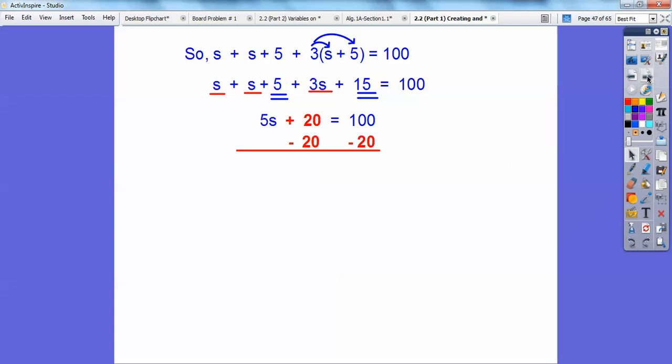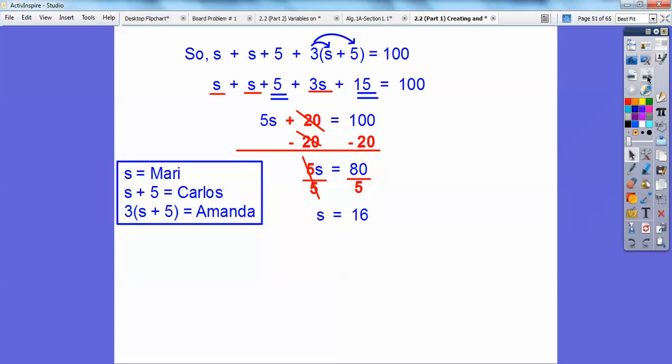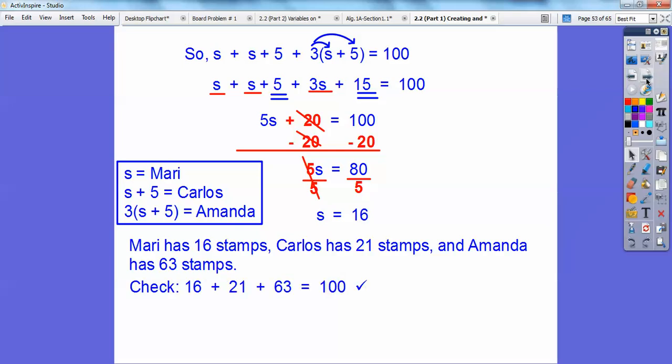Now we're going to go ahead and subtract off that 20 on both sides and get 80. So 5 goes into 80 16 times. Let's answer the question here you guys. Remember Marie has S stamps, Carlos has S plus 5 stamps, and this is Amanda's stamps right here. So we just plug in 16 right here, right here, and right here. So that's going to tell us that Marie has 16 stamps, Carlos has 21 stamps, and Amanda has 63 stamps. Always it's good to check your answers. So let's go ahead and add them up and they do add up to 100. So it looks like everything works out okay.